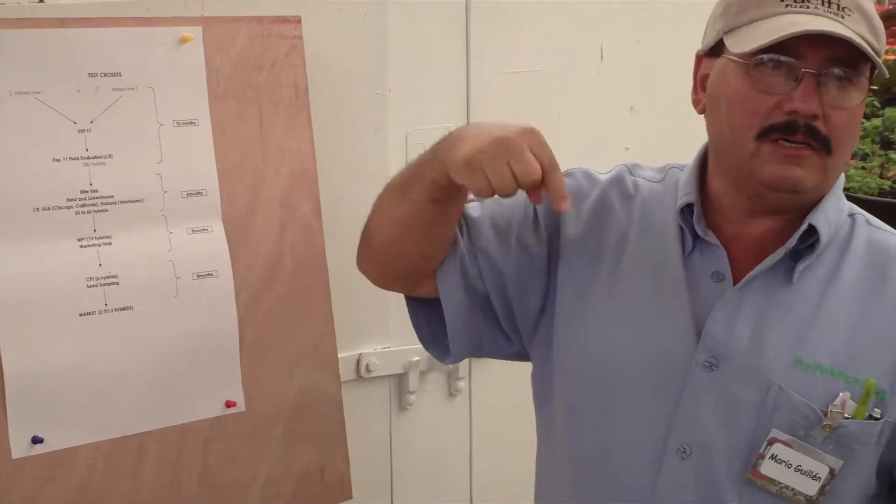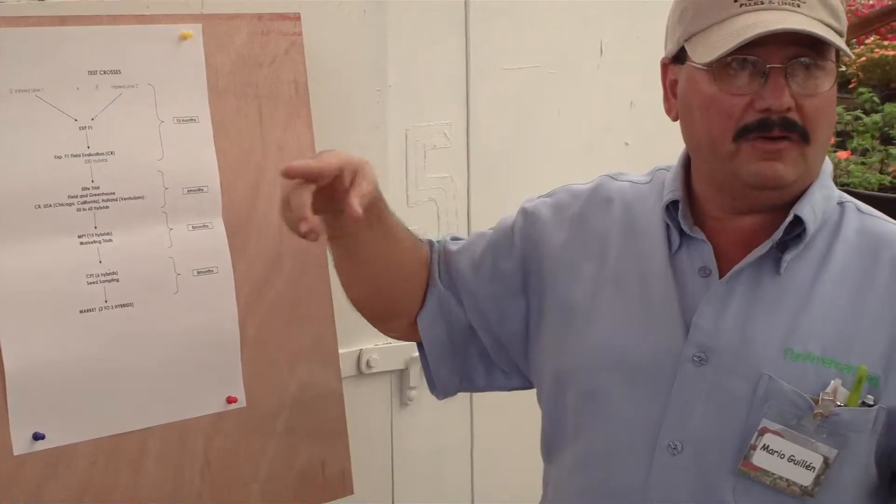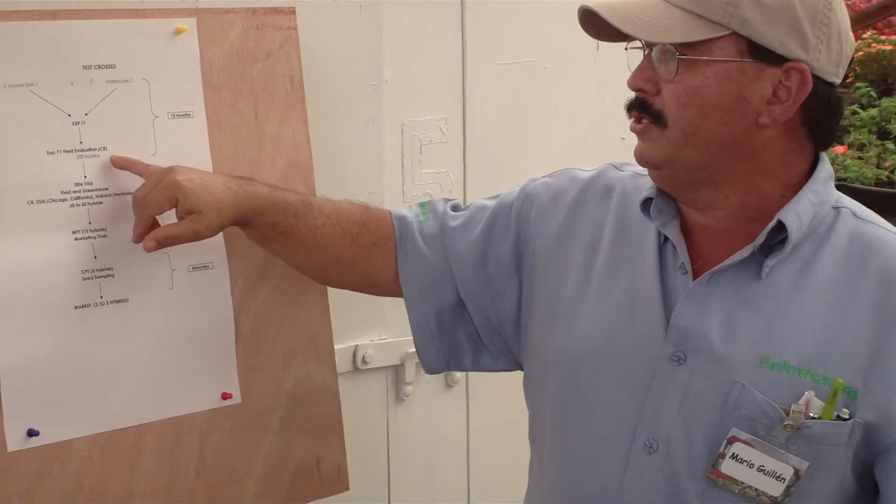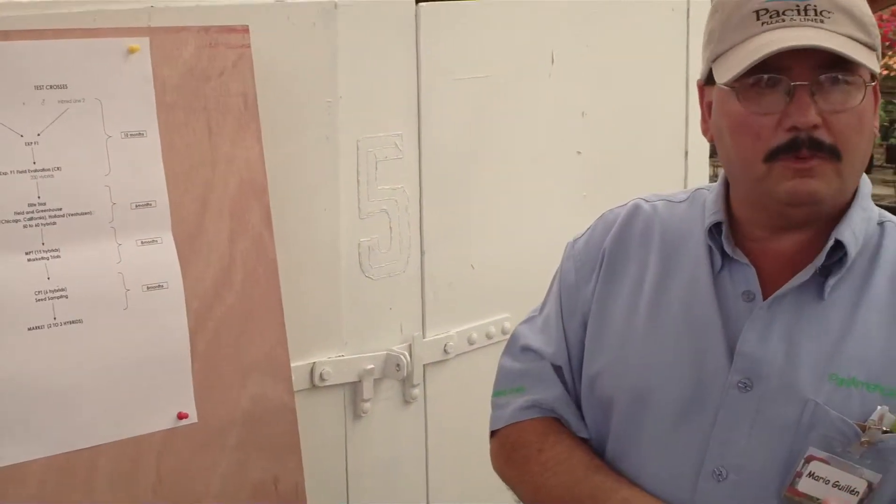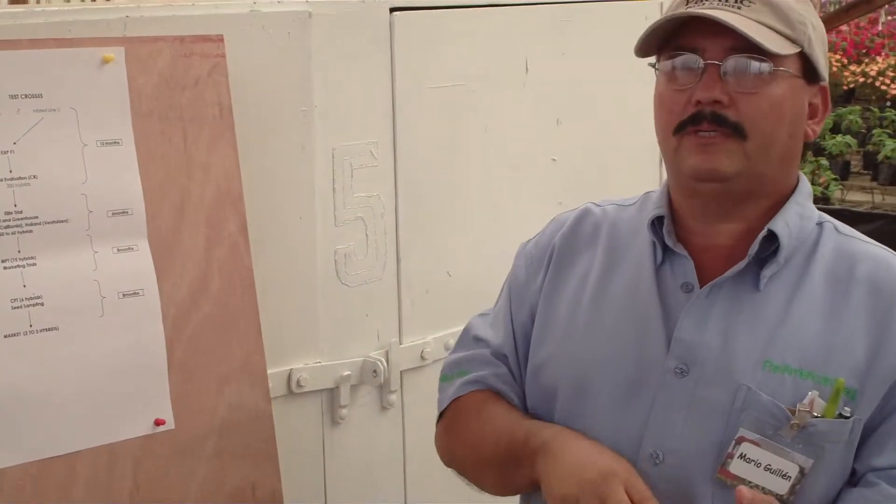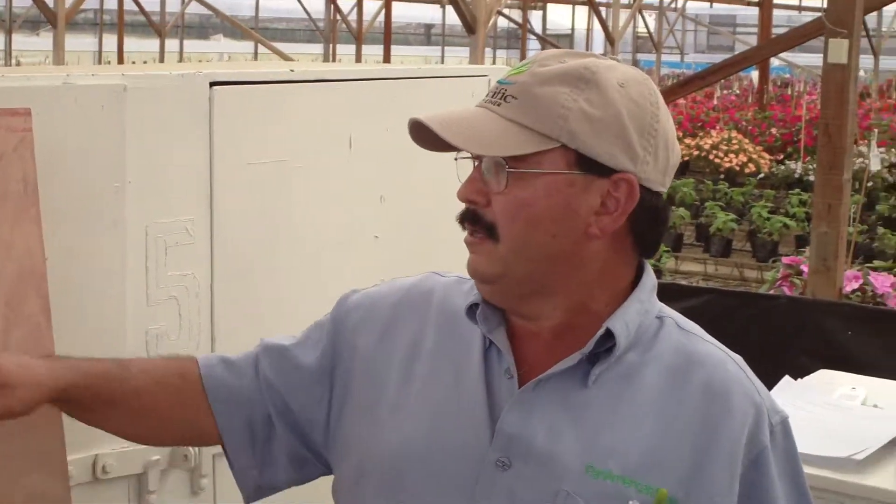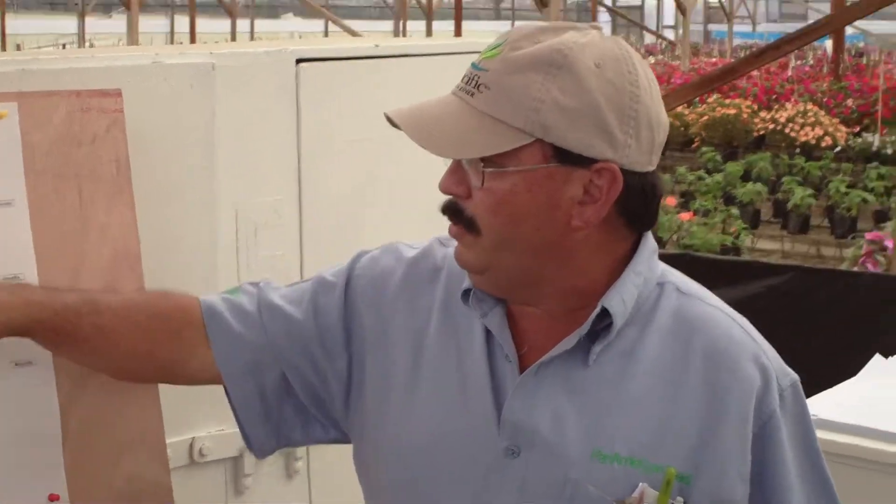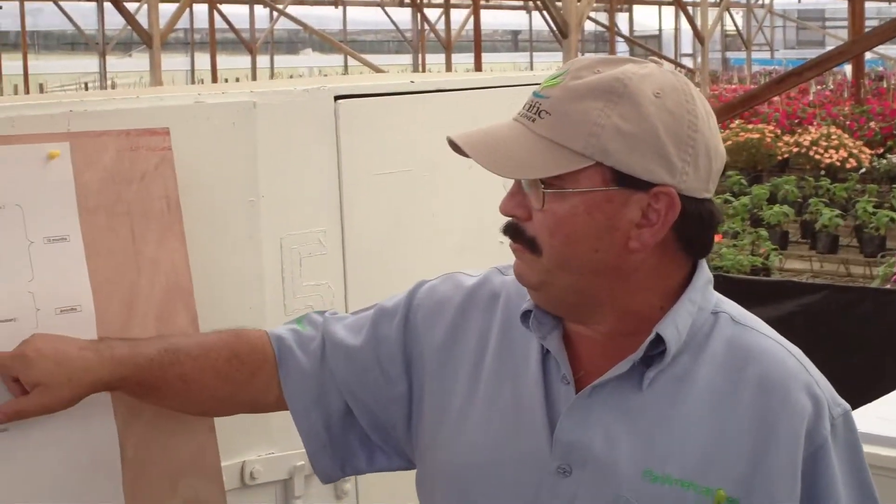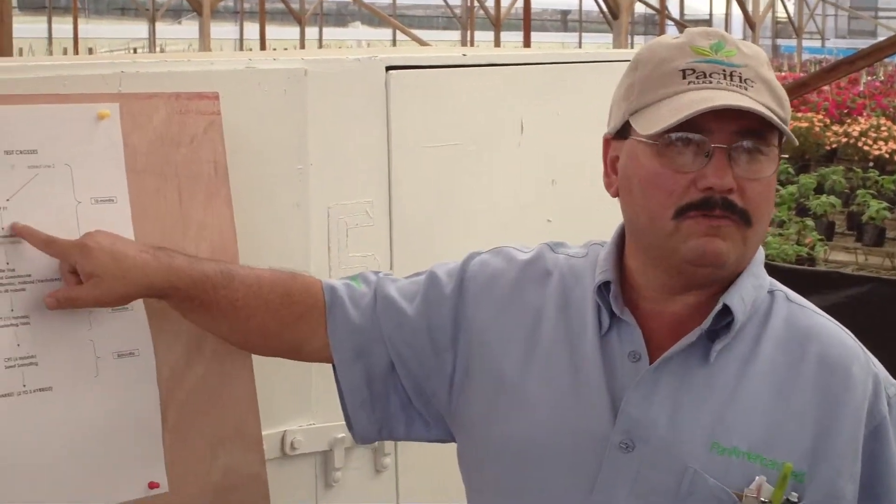Usually 200 hybrids are good for that. When I have those 200 hybrids, I sow them here in Costa Rica in the field and greenhouse to see which of them are good for GL potential, germ, seedling vigor, and good earliness to flower, better uniformity for habit, branching, flower size, etc. When I make this sowing, usually 50 or 60 hybrids are good for that.